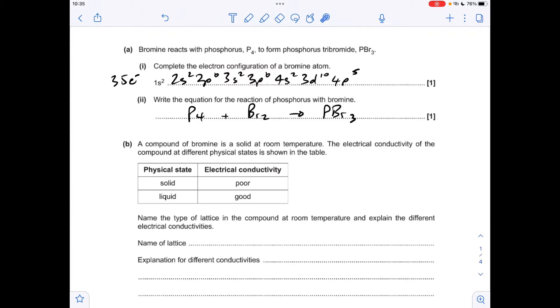Moving on, the equation. They've told us phosphorus formula is P4 so we need to use that in the equation. We'll balance the PBr3 first, so we've got four Ps on the left so we need a 4 in front of the PBr3. That's given us 12 bromines so we need a 6 in front of Br2.